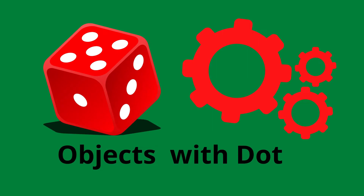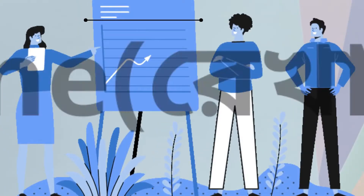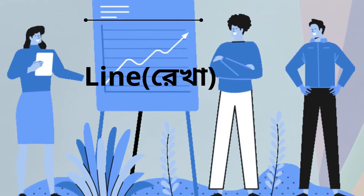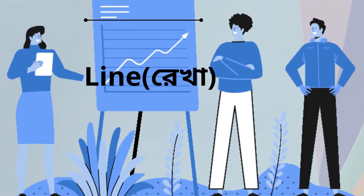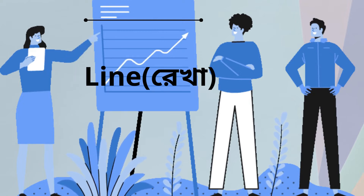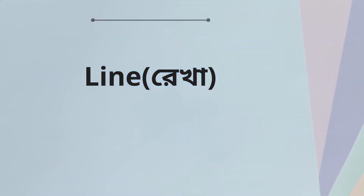Line. The object is made of a line such as a calendar.